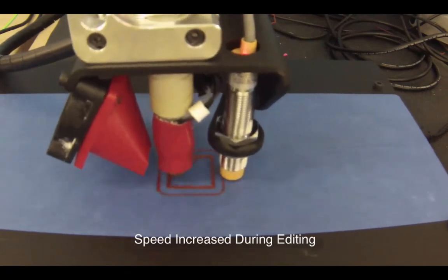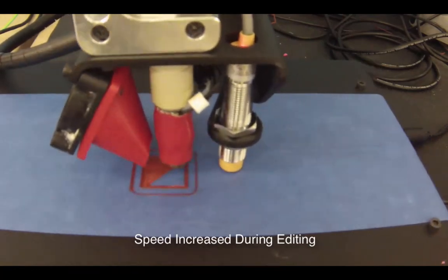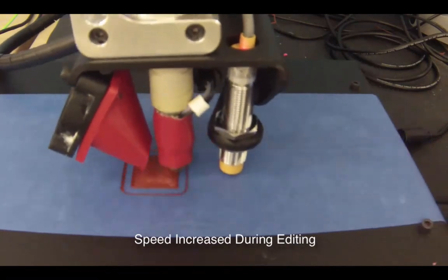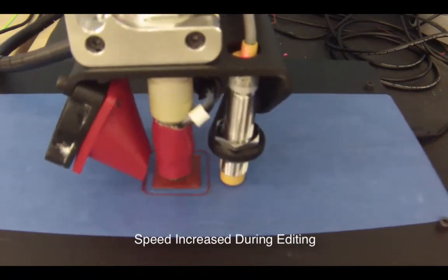When the printer completes a layer, it raises the hot end and begins the next layer. The first few layers on the bottom will be completely filled to make the object stable.